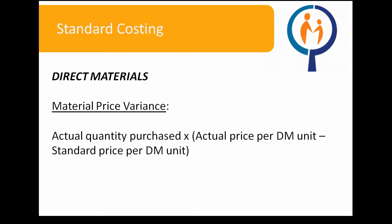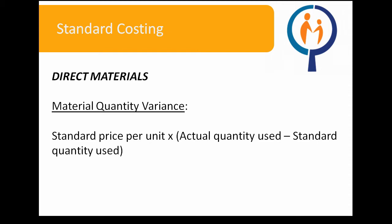To conduct standard costing, you require knowledge of several formulas. There are two pertaining to each of direct materials, direct labor, and variable overhead. When it comes to direct materials, we have the material price variance and the material quantity variance formula. The material price variance involves multiplying the actual quantity purchased by the difference between the actual price and standard price of one unit of direct material, summarized as AQPurchase × (AP − SP). The material quantity variance involves multiplying the standard price per unit by the difference between the actual quantity used and the standard quantity expected to produce the same number of units, summarized as SP × (AQ − SQ).